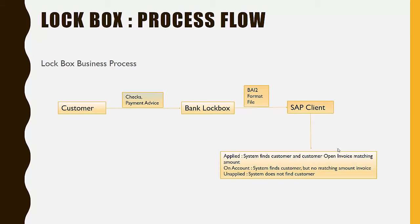What Lockbox does is automate this whole manual process of receiving the check, entering the check, and receiving the money. Instead of sending checks to the company, customers send them to a bank specified by the company. The bank has a Lockbox number, which is a PO box number. All checks along with the payment advice are sent by the customer to this PO box number. The bank then collects these checks, collects the payment, and prepares an electronic file containing the customer name, check number, amount, and details like the customer invoice for which payment was made.